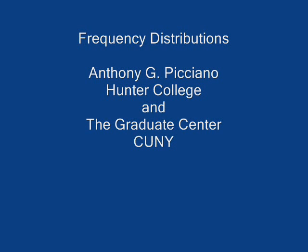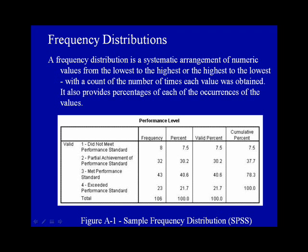Frequency distributions. A frequency distribution is a systematic arrangement of numeric values from the lowest to the highest, or the highest to the lowest, with a count of the number of times each value was obtained. It also provides percentages of each of the occurrences of the values.